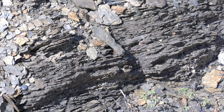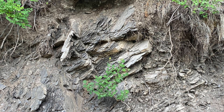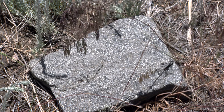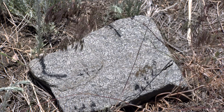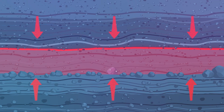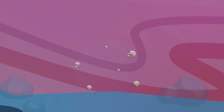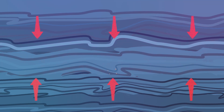Shales are the most common sedimentary rocks and create the most common regional metamorphic rocks. They first convert to slates, and with more heat and pressure can convert to schists, and finally gneisses. With each step, more minerals line up and form foliation, and minerals become more unstable, allowing new minerals to form in their place. Quartzites and marbles can form through regional metamorphism as well.